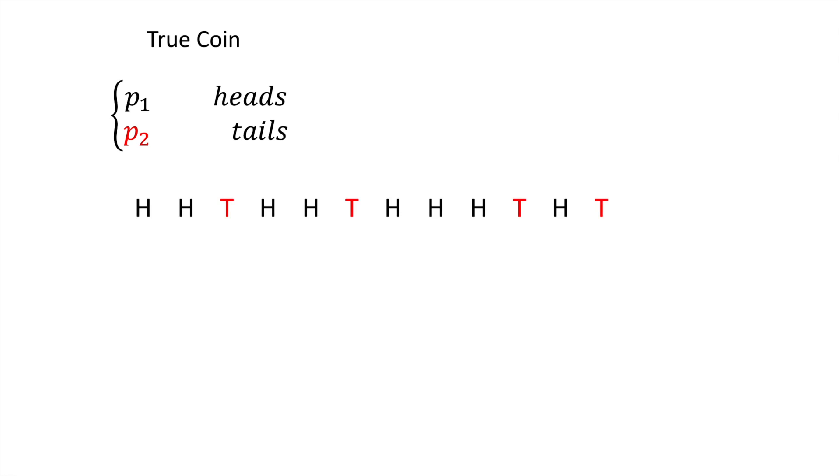We then work out the probability of coin 1 generating the sequence. Working this probability out is quite simple. Whenever we see heads, we just multiply by p1, and whenever we see tails, we multiply by p2.